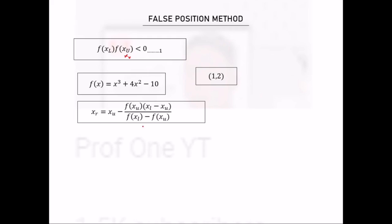The formula to find the midpoint xr is: upper bound minus the function of the upper bound, times the lower bound minus the upper bound, all over the function of the lower bound minus the function of the upper bound. So with iteration 1, we are going to find our xr using this formula.